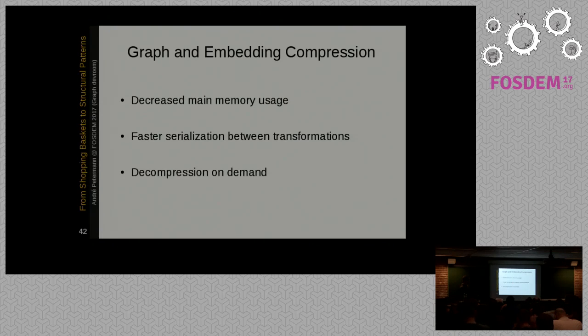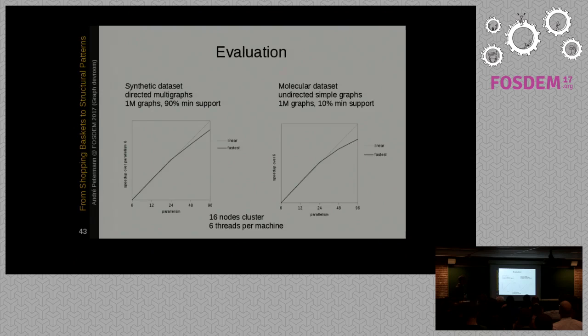Then additionally we experimented with graph and embedding compression to mainly... what really matters in Apache Flink. And the decompression we execute only on demand. For example, embeddings in infrequent patterns will never be decompressed and so on. There are a lot of detailed optimizations.